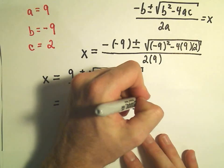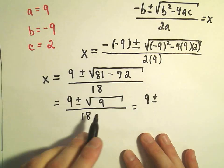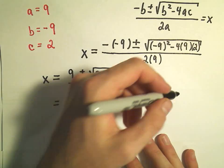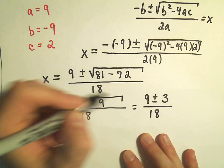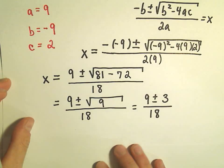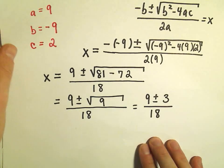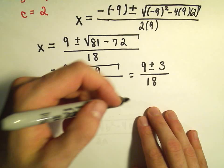And now we can write this as 9 plus or minus, the square root of 9, we know that that's just going to give us 3, over 18. And now what we do is we break this down into two different statements. And this is going to give us our solutions.